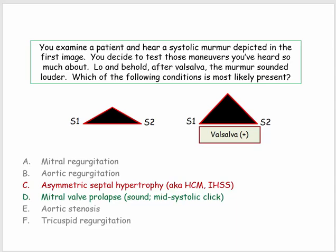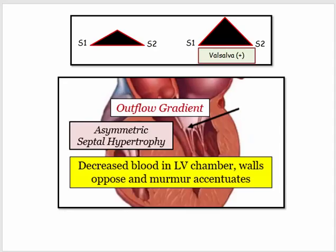Hypertrophic cardiomyopathy is referred to here as asymmetric septal hypertrophy, underscoring the different terms that might be used. As for mitral valve prolapse, it too would worsen with decreased venous return, but the characteristic exam finding would be a mid-systolic click, not a holosystolic murmur. The purpose of this question and the exam maneuvers in general is to assess your understanding of the dynamic outflow gradient.